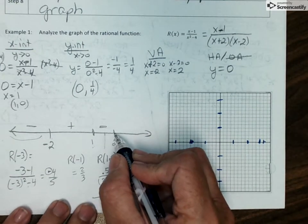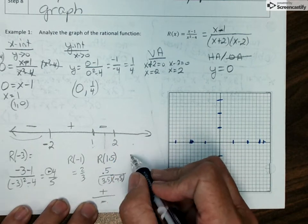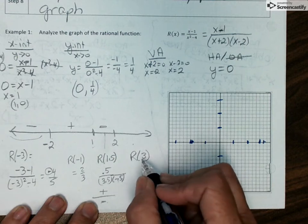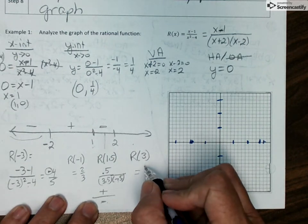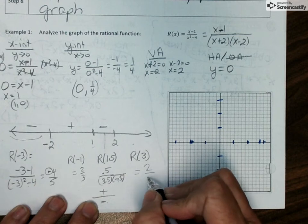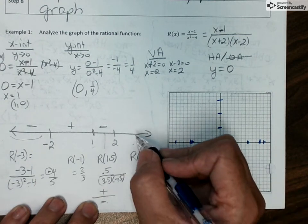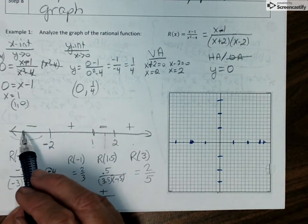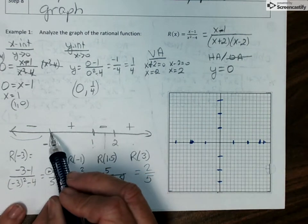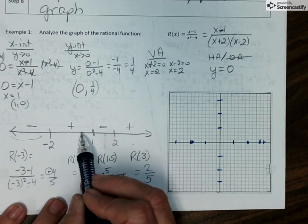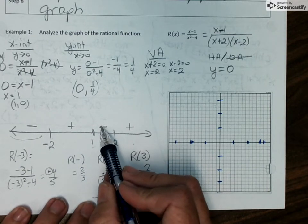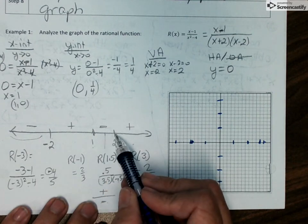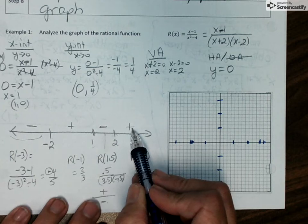And finally, after the x value of 2, I need to plug in something. So let's pick positive 3 here. If you plug positive 3 into the function, you will end up with positive 2 over 5, which is positive. So I've got a negative sign for all x's smaller than negative 2. I have positive for x's between negative 2 and positive 1. I have a negative value for y's between 1 and 2. And for all x's that are greater than 2, my y values are positive.